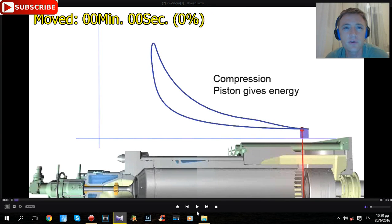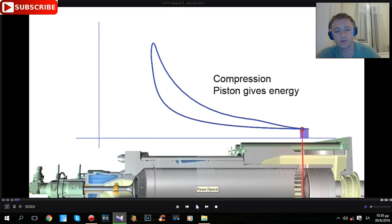Hello everyone, this is Engine Story. Today I have for you a PV diagram which is close to our speed to understand exactly what happens inside a cylinder of a two-stroke engine. First of all, as you can see, the piston gives energy for compression. Let's begin our video.